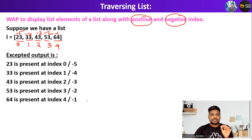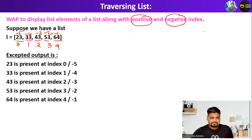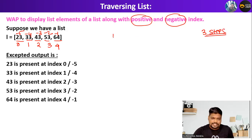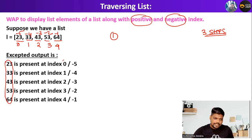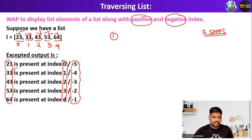I will be going to solve this particular problem in 3 steps. The first step is how to display only the values. The second step is how to display the values along with the positive index. The third step is how, from the positive index value, you can derive and display the negative index — what formula to use for it.